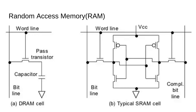Static RAM is faster and more expensive. It uses transistors to store data and holds data as long as power is supplied. Static RAM is often used for cache memory. Dynamic RAM is slower and cheaper. It stores data as an electrical charge in a capacitor, which leaks over time, requiring DRAM to be constantly refreshed. Dynamic RAM is the type typically used as main memory. That constant refreshing is why it's called dynamic.